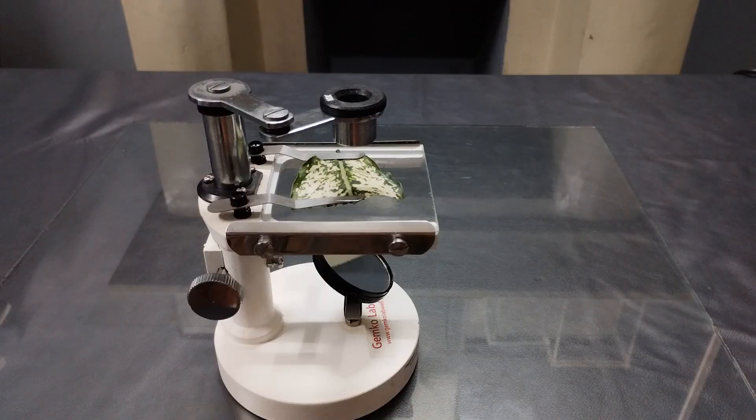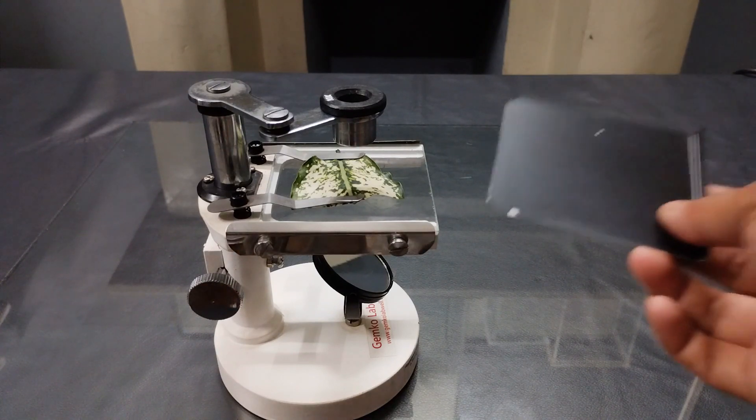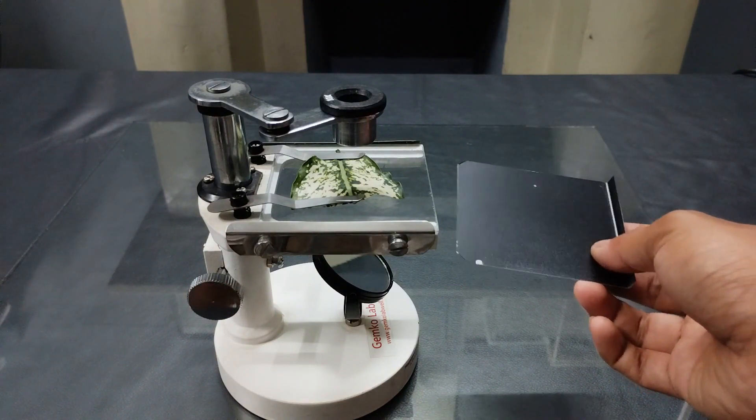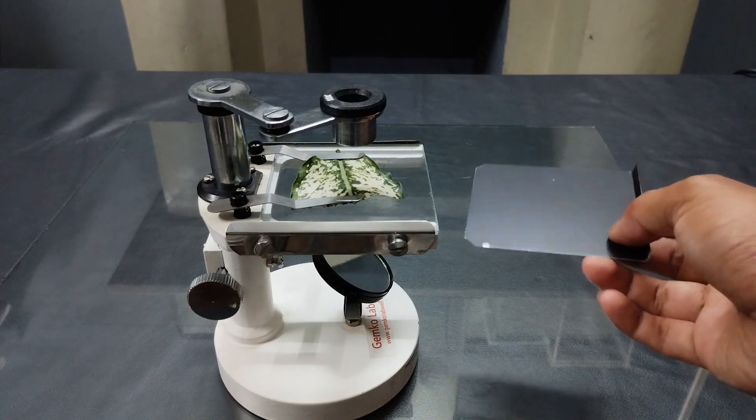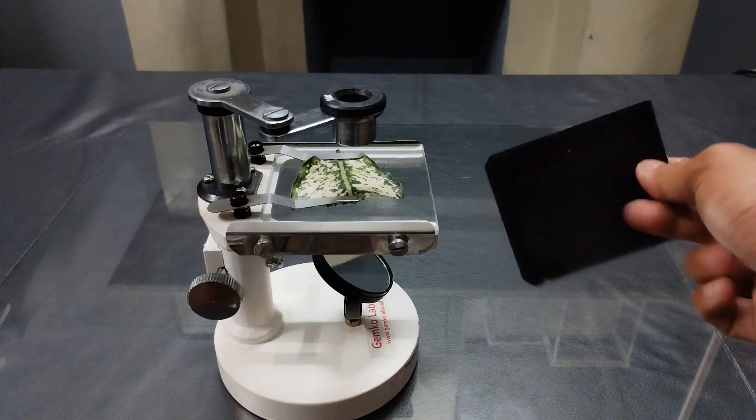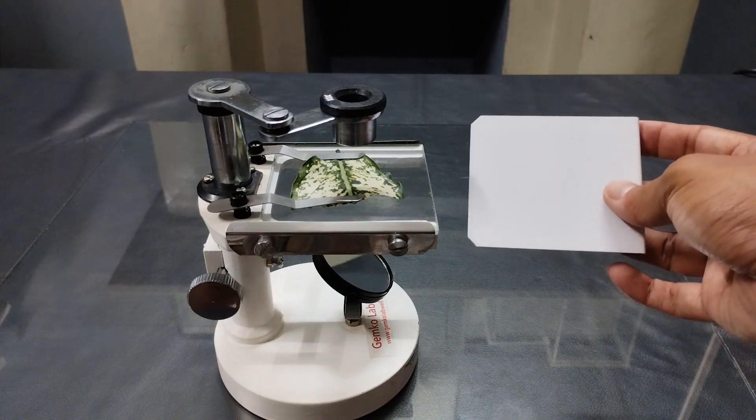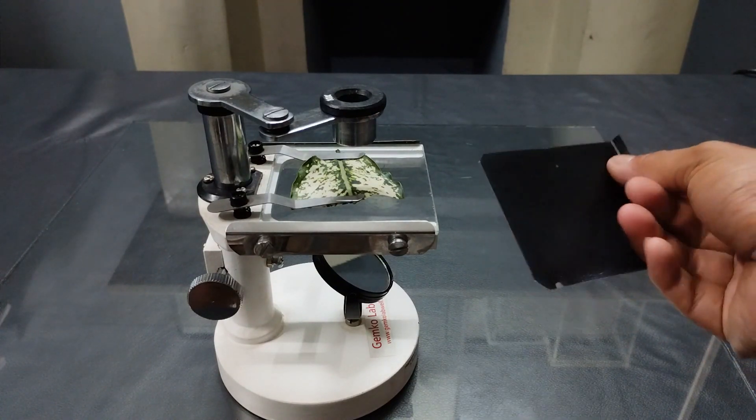If the specimen is of an opaque nature and you need to do a surface examination using reflected or scattered light, then all you need to do is insert the accessory stage plate beneath the glass stage. Either the black or the white side of the plate can be used depending on what color background you need during the examination.